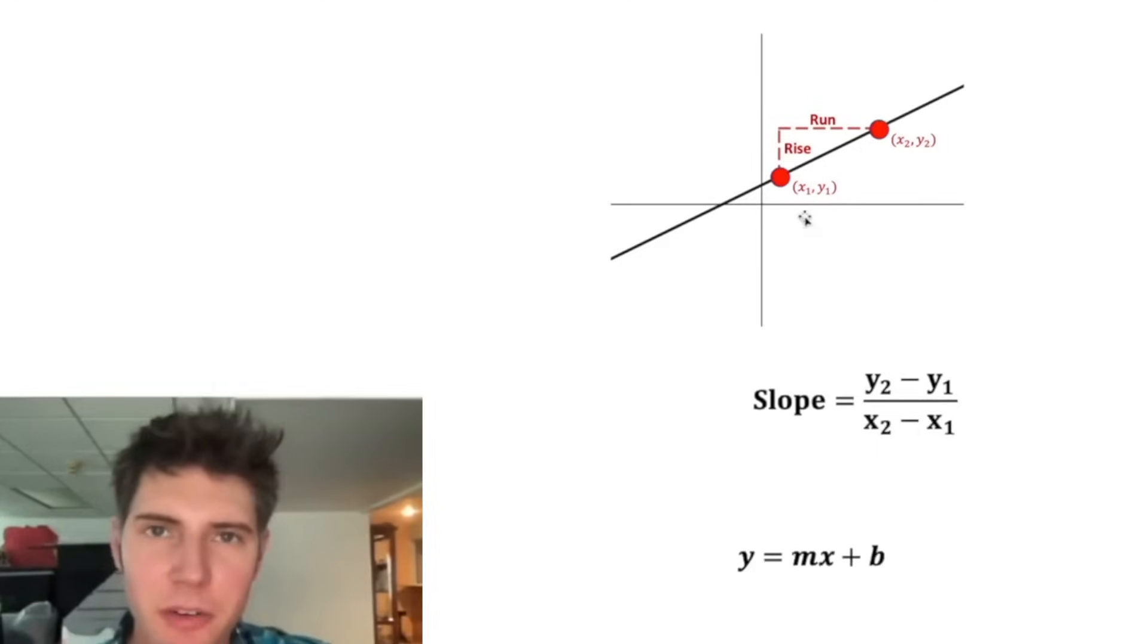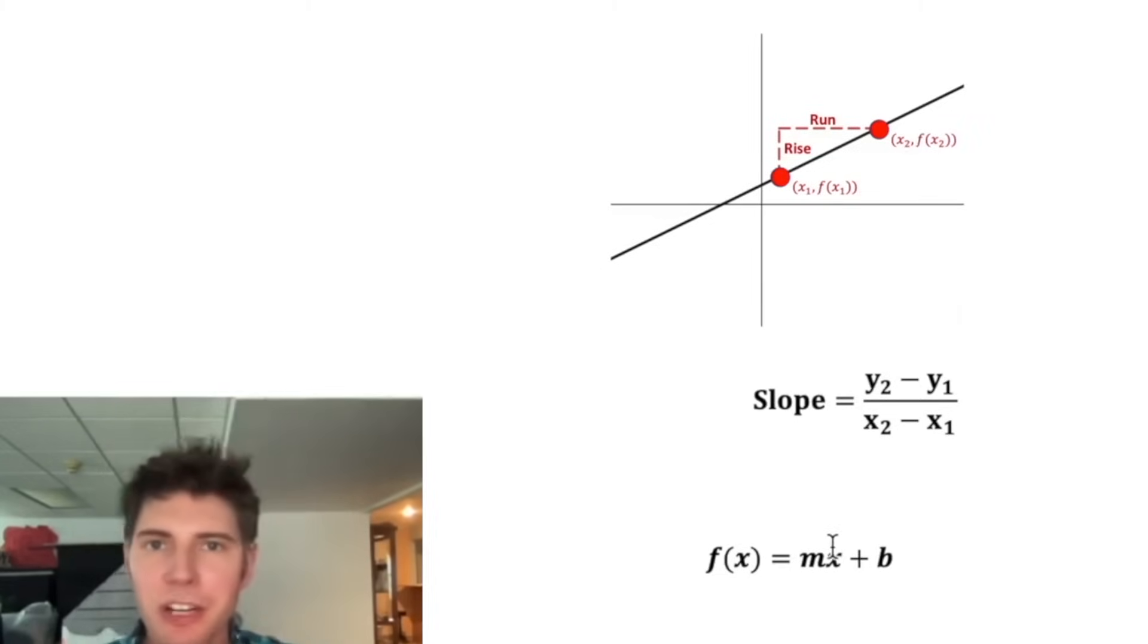This is the equation of a line y equals mx plus b. This is a great way to work with lines, but if we want to get more complicated, let's change this into function notation into an f of x. It works the exact same way. We plug x1 into it and it outputs this y1, but instead it's going to be called f of x1. And when we plug in x2, we're having an output of f of x2.